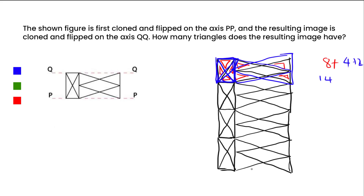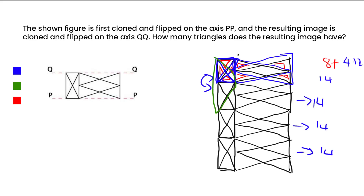Now we want to calculate every single part of the image. The same count applies here — fourteen comes here, fourteen here, fourteen here, and fourteen here as well. Now we want to check the possibilities of integration between these parts — triangles formed across sections. I'm changing to green: one, then two, and one, then two — we have two, adding four for this.